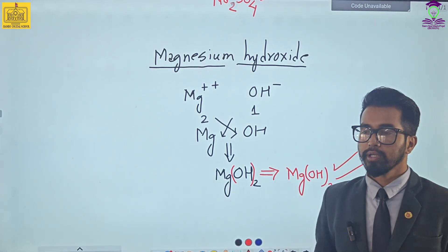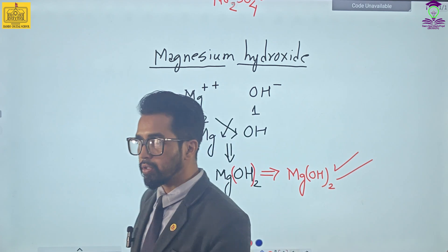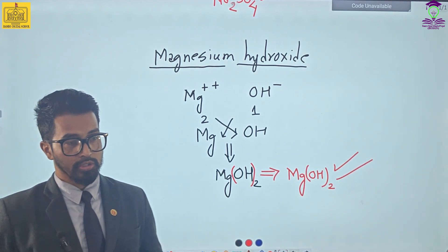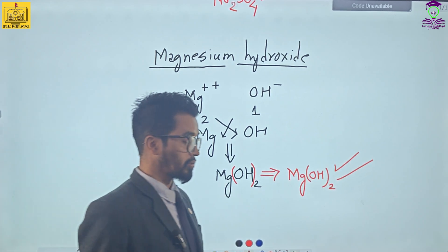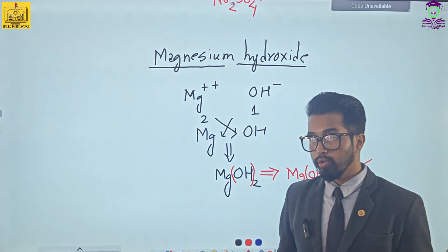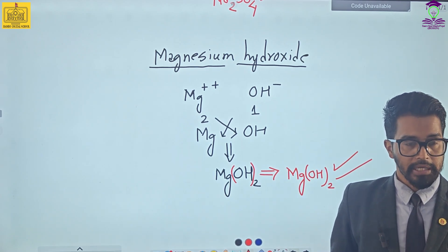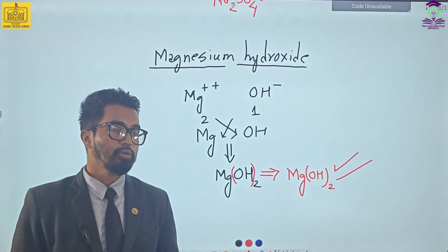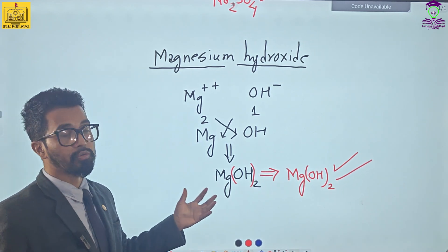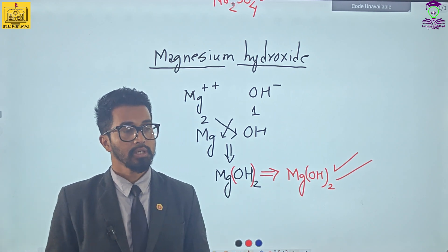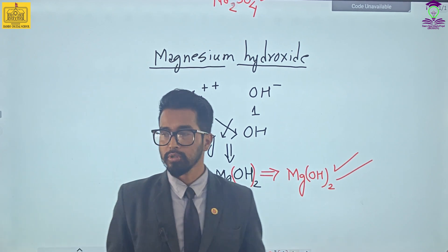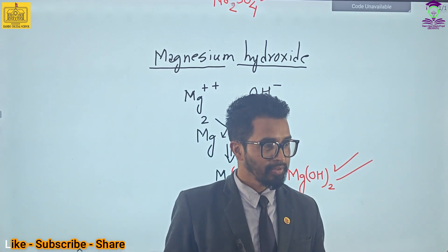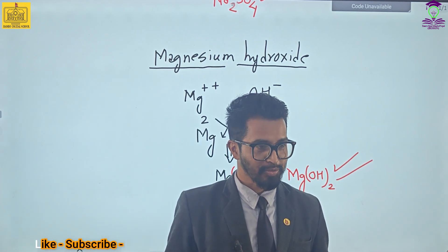In this way you are going to make compounds, starting from positive and negative ions, and you will be making compounds yourself using your own worksheet provided by your teachers, which is also known as a smart worksheet. Then you will understand how compounds are formed. If you understand positive and negative ions, then almost 90% of problems in chemistry can be solved. Don't forget to like, subscribe, and share Hamlo Digital School. Thank you so much.